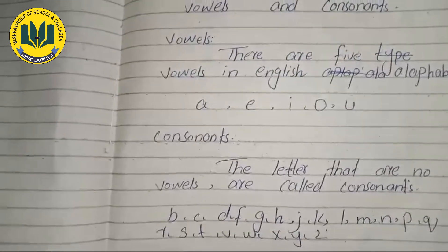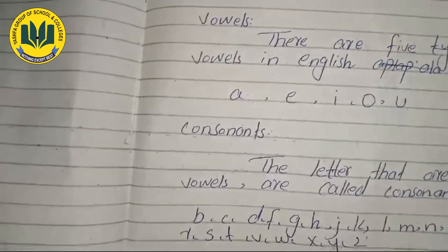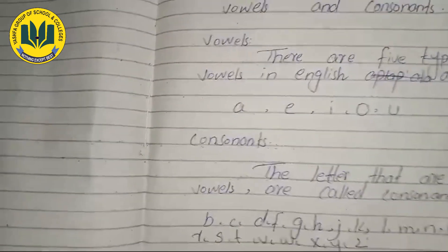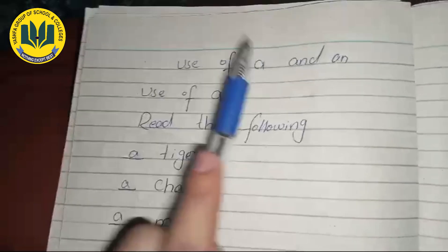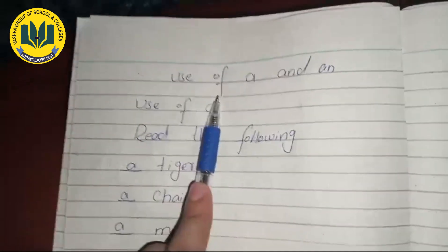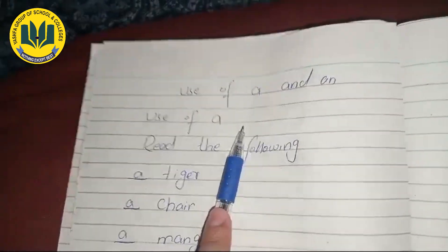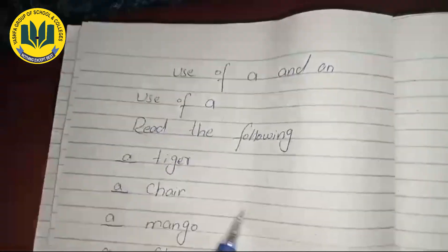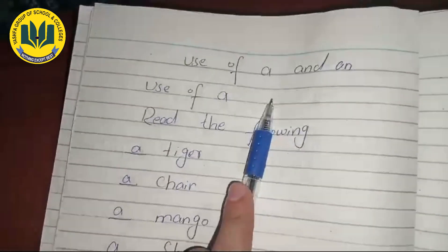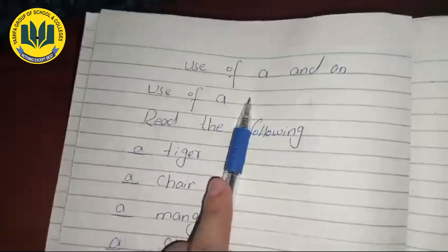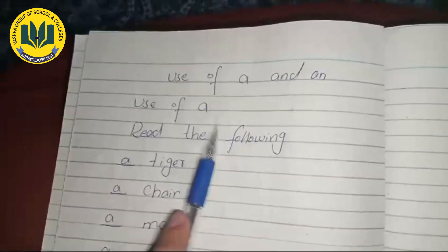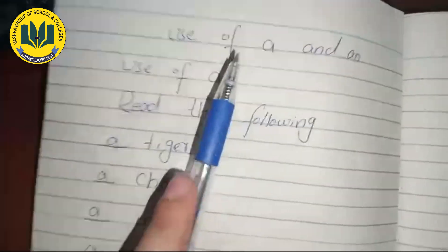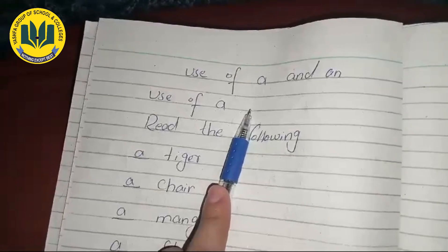Next, we will learn about the use of 'A' and 'An'. We use 'A' with consonant sounds, and we use 'An' with vowel sounds.